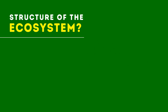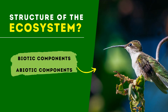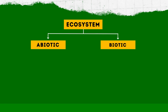Next, the structure of ecosystem. The structure of ecosystem is generally characterized by both biotic and abiotic components — meaning the ecosystem consists of two components: biotic and abiotic. The abiotic component is the non-living component, which may include climate, while the biotic component includes living organisms.